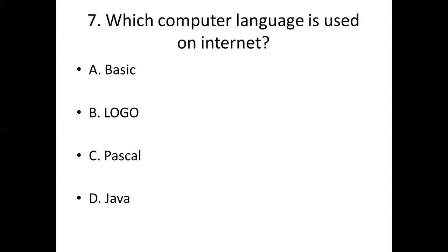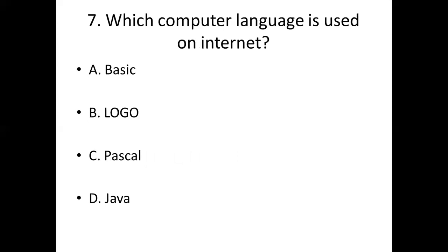Seventh bit: Which computer language is used on the internet? Option A: Basic. Option B: Logo. Option C: Pascal. Option D: Java. Answer: Option D — Java.